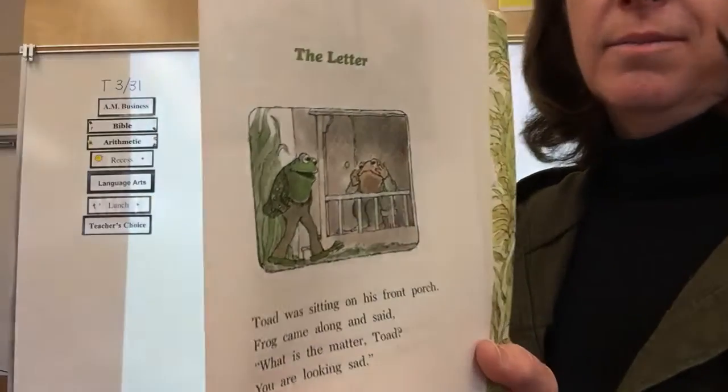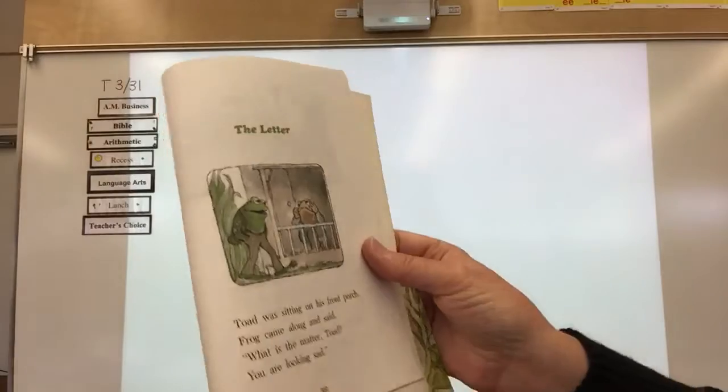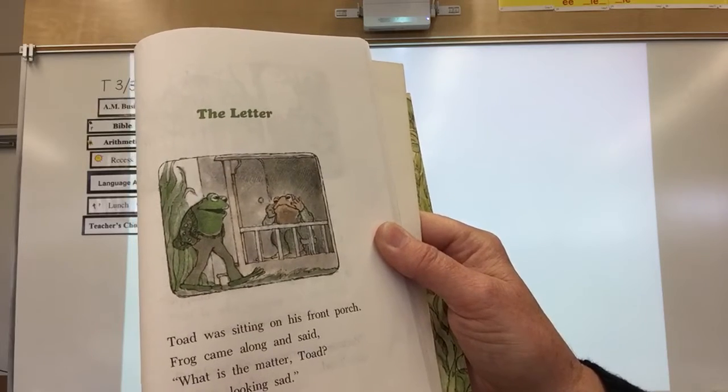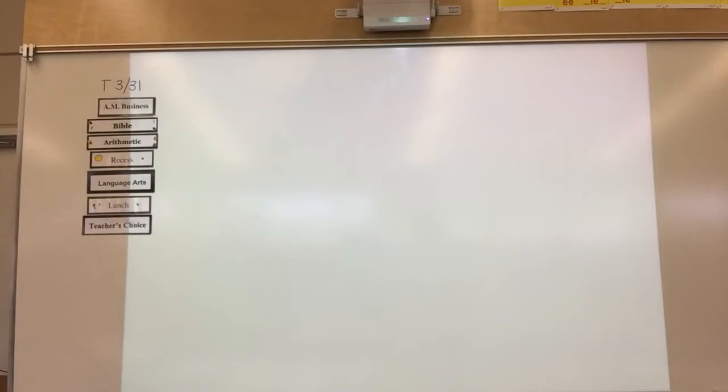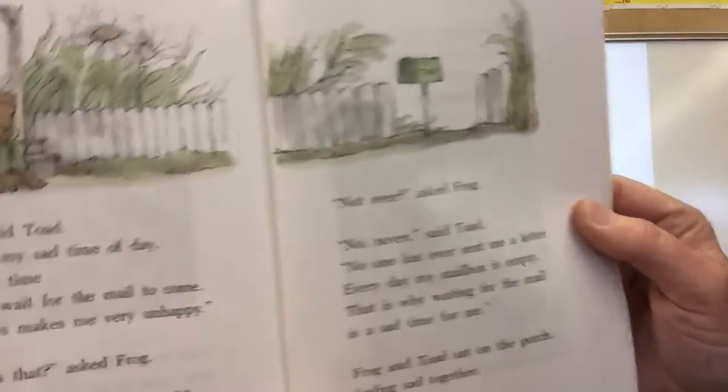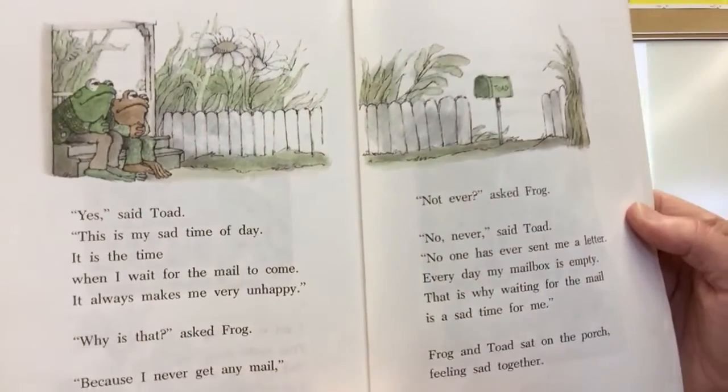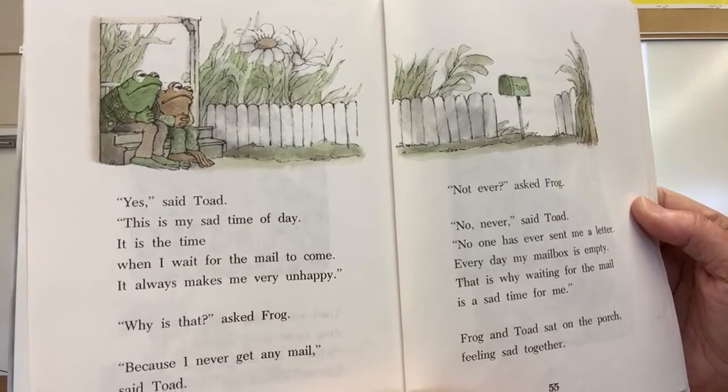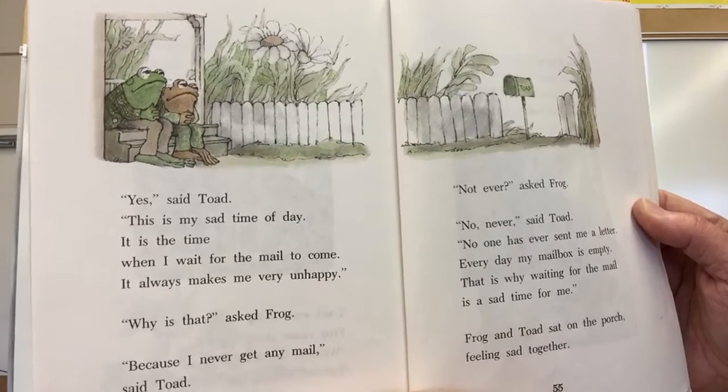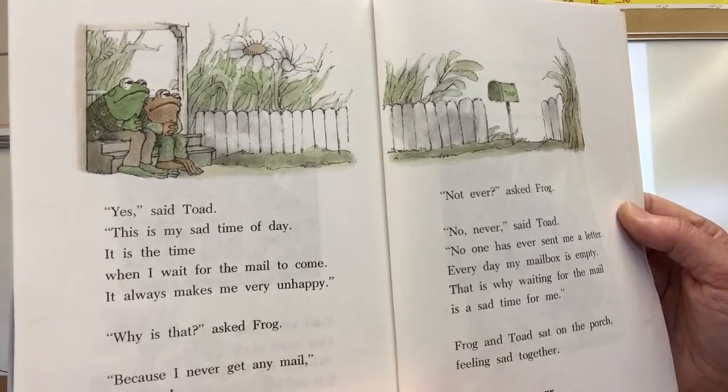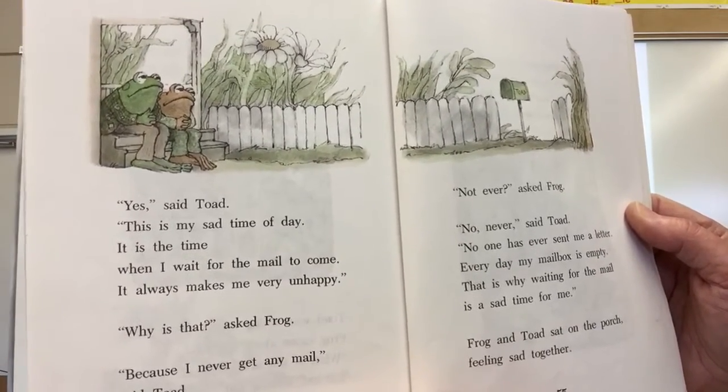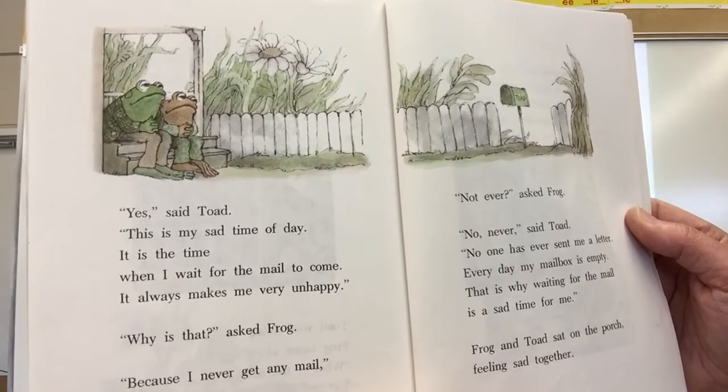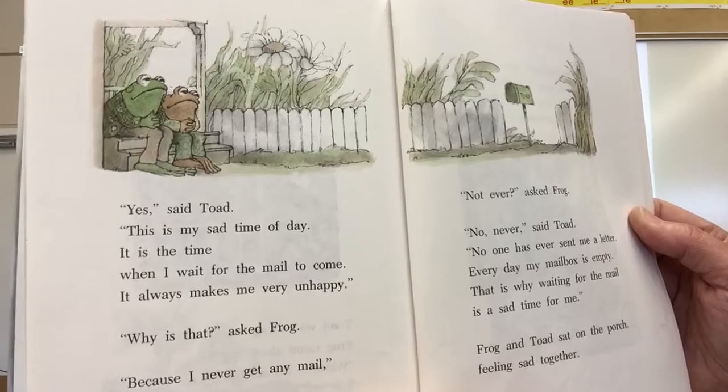Take a quick look at how Toad looks. Toad was sitting on his front porch. Frog came along and said, What is the matter, Toad? You are looking sad. Yes, said Toad. This is my sad time of day. It is the time when I wait for the mail to come. It always makes me very unhappy. Why is that? asked Frog. Because I never get any mail, said Toad.